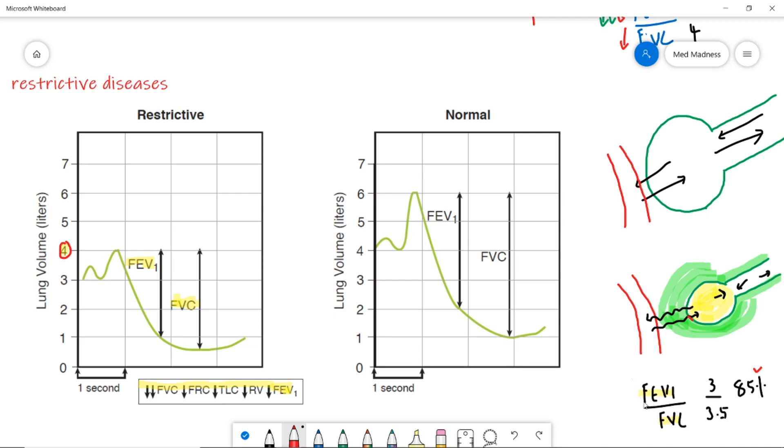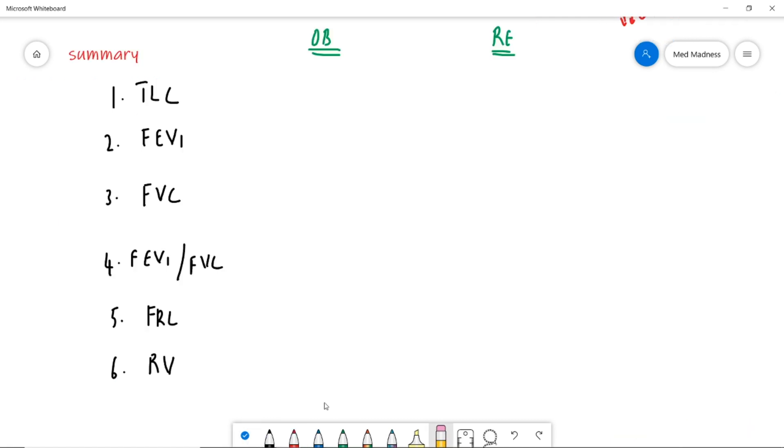Now, make this point very clear. Compare FEV1 and FVC which is decreased a lot. Yes, FEV1 is decreased, FVC is decreased but FVC is lot more decreased making the ratio greater than 80%. Now, I hope you are very clear about this.